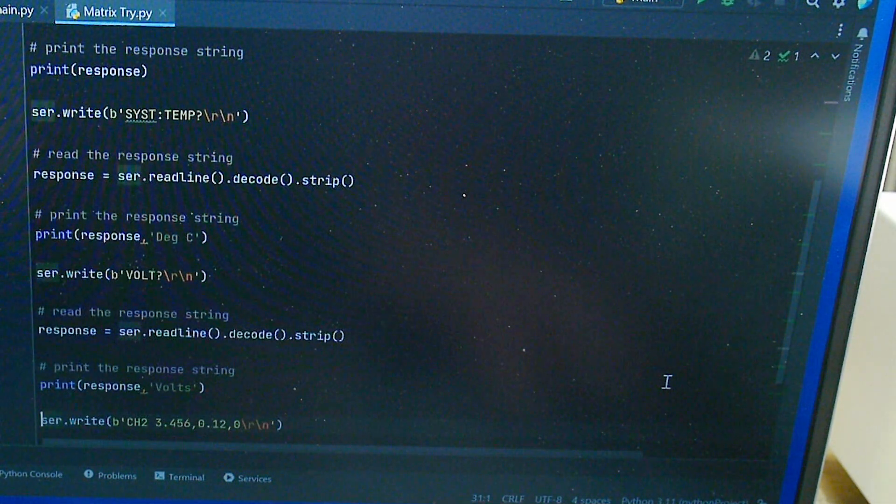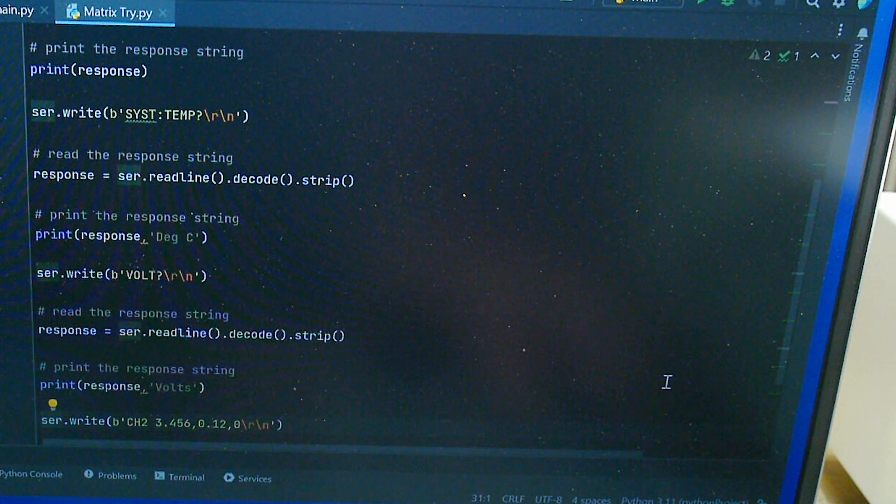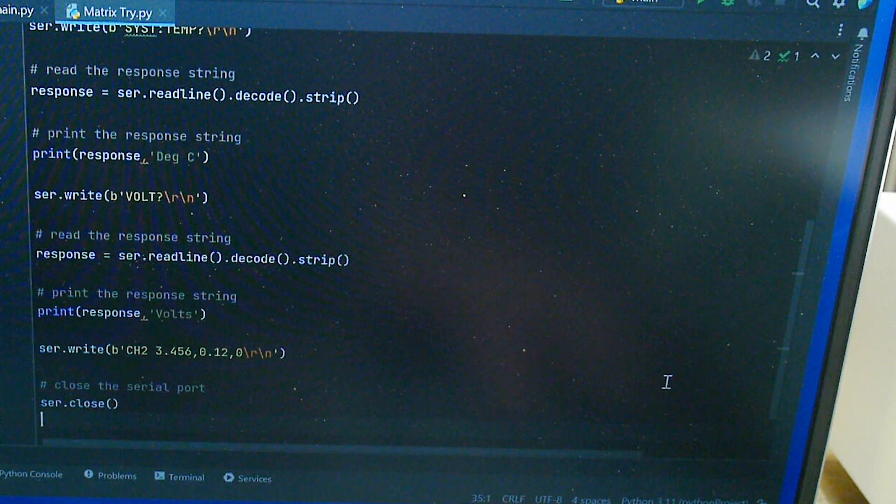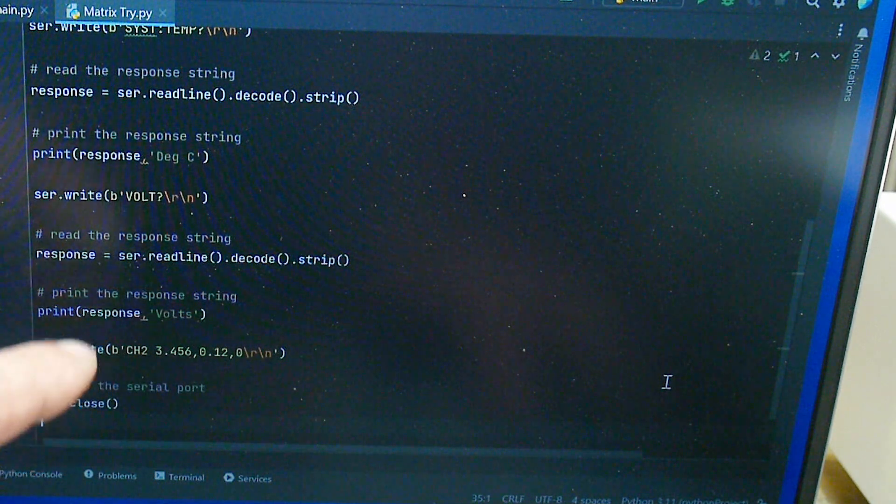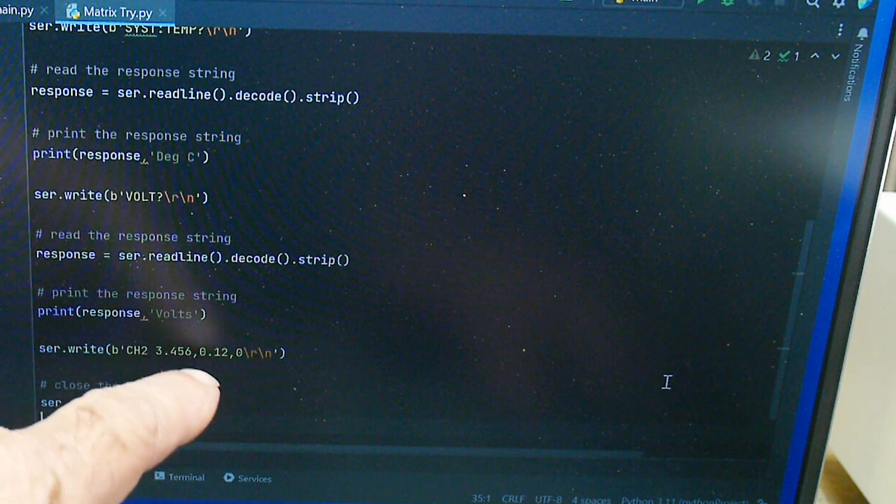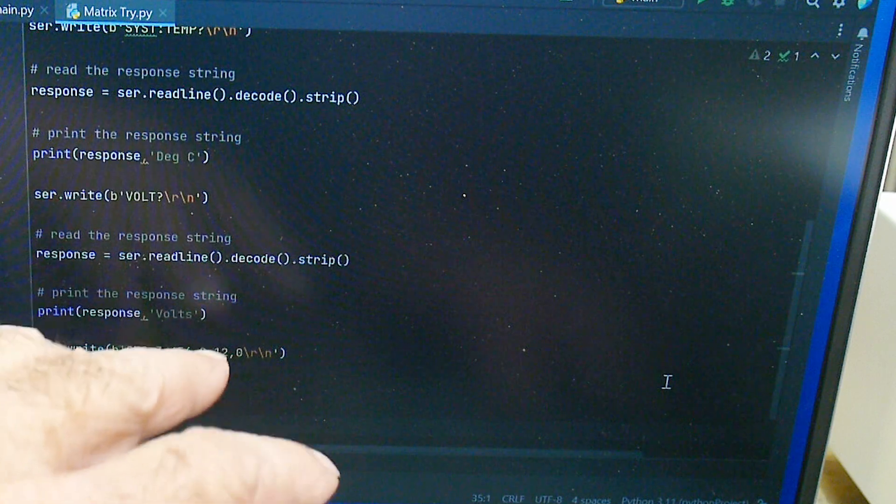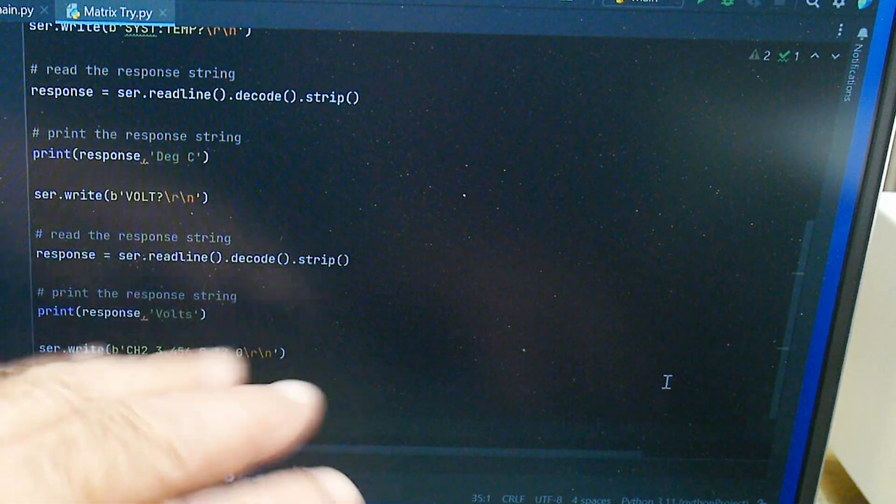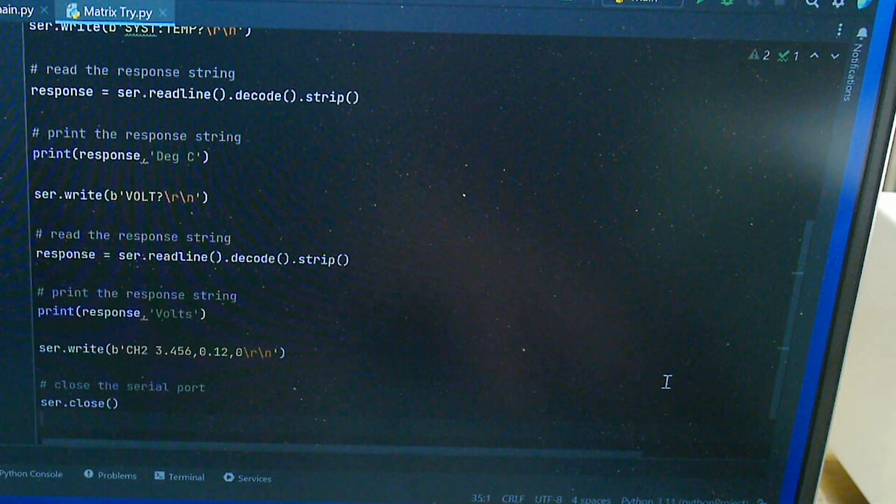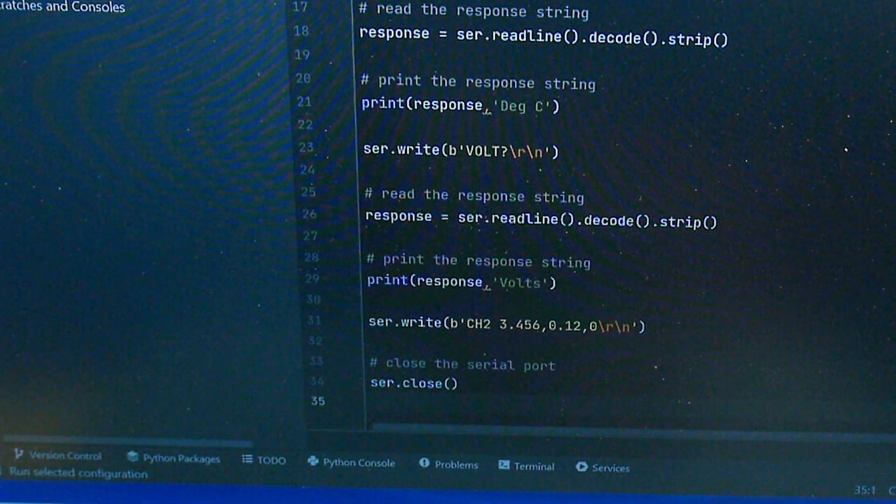At the very end I will say volt question mark, I'll ask it for whatever channel it's defaulting to, channel one, tell me what the volts are. Then at the end I'm going to write, this is kind of a shorthand SCPI which is channel two, 3.456 volts, 0.12 amps - set channel two to 3.456 volts, 0.12 amps and leave the output off. Then do a serial close. That is the program, so let's go ahead and execute it.